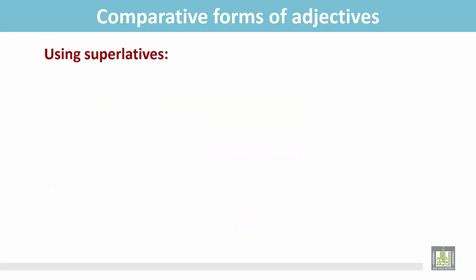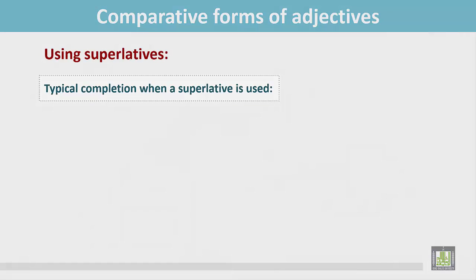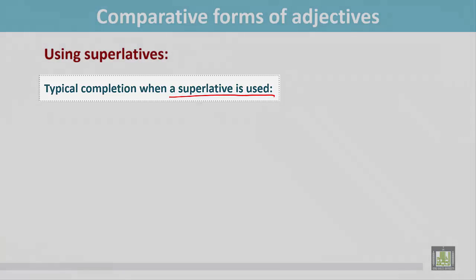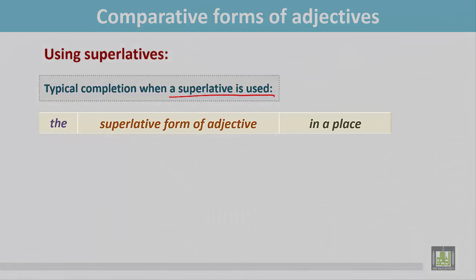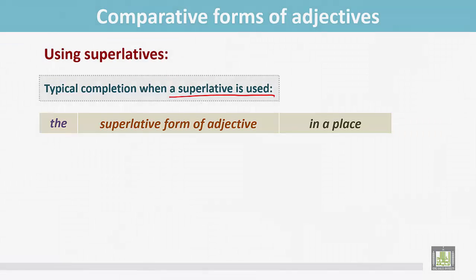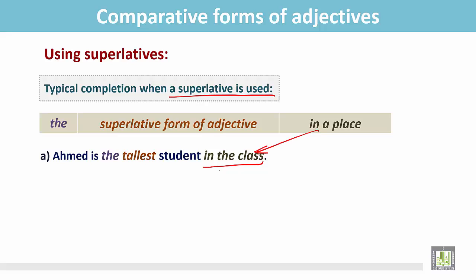Using superlatives — typical completion when a superlative is used. See the structure: we write 'the,' then the superlative adjective, then the place. For example: 'Ahmed is the tallest student in the class' — 'in the class' is the place, and 'he is the tallest boy in the class.'